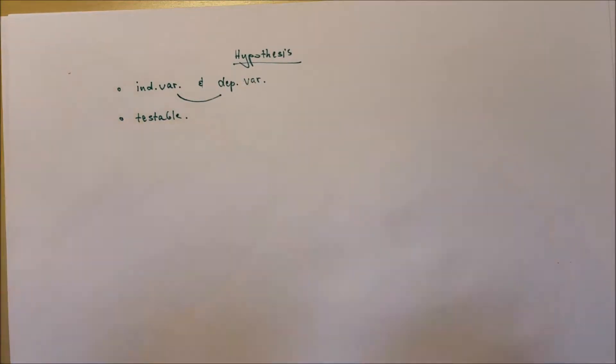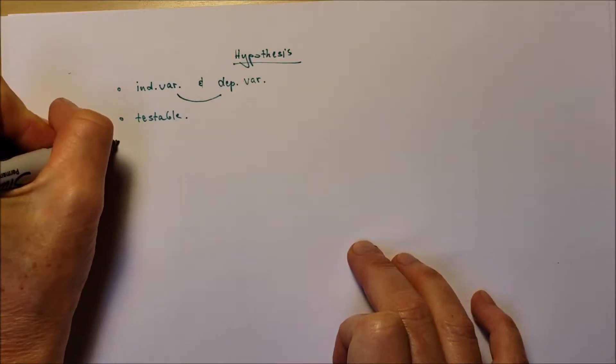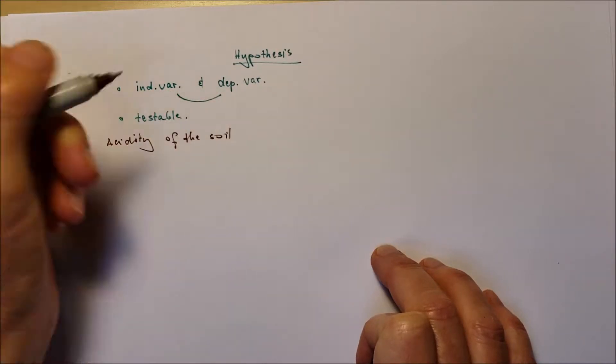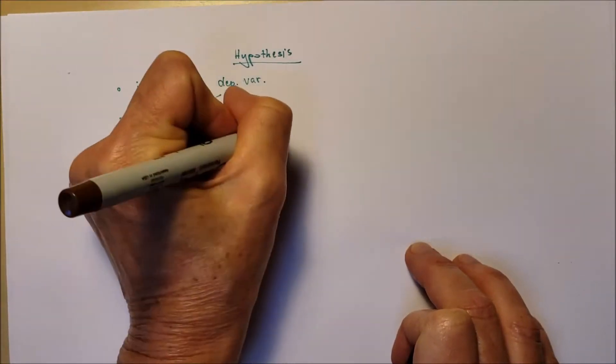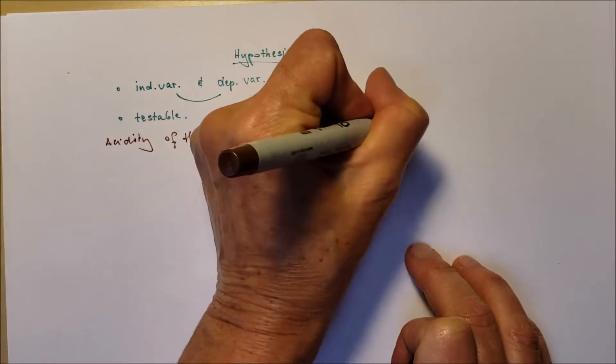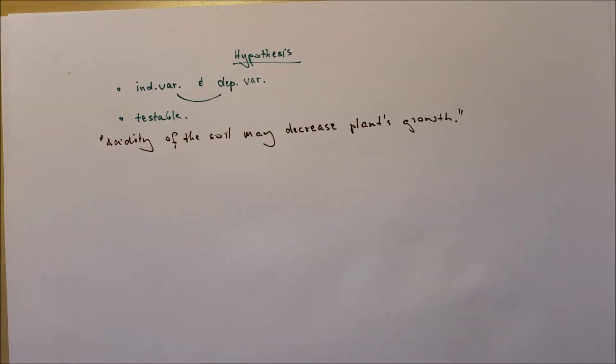For our example, we can say that acidity of the soil may decrease plant's growth. So this is a general statement, we have to make it a more precise statement that is going to be testable.